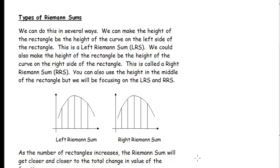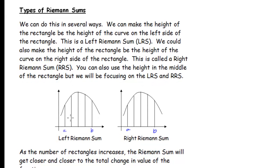We have several types of Riemann sums. Looking at our pictures, suppose A is on the left and B is on the right, and the region is broken up into four rectangles without tops yet. The type of Riemann sum determines how you make your rectangles. If it's a left Riemann sum, you make the height of your rectangle be the height of your curve on the left side of each rectangle.